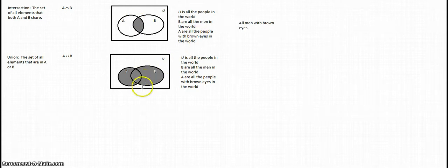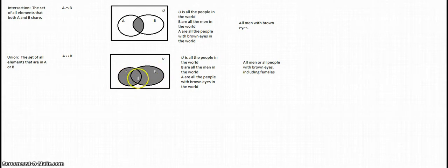Whereas the union down here is all men or all people with brown eyes. That obviously is going to include females. So all men or all people with brown eyes is what that is including right there.